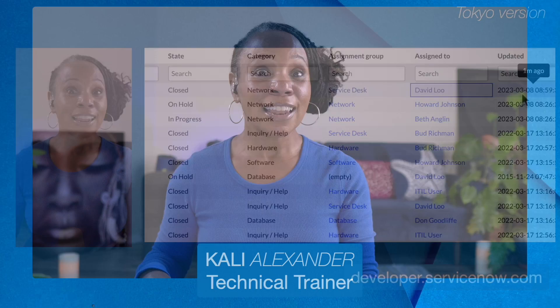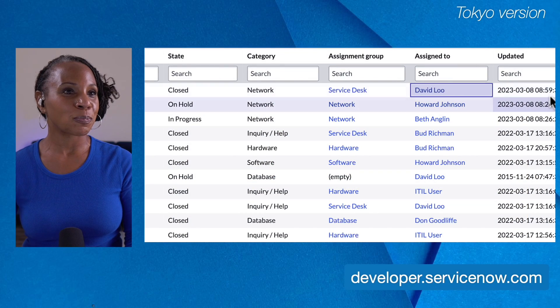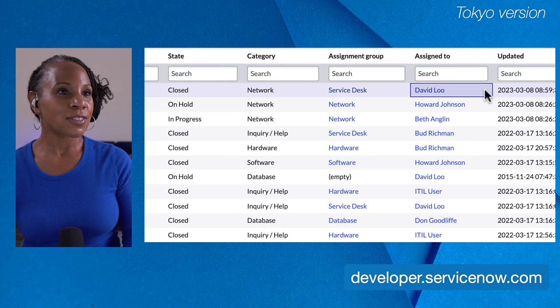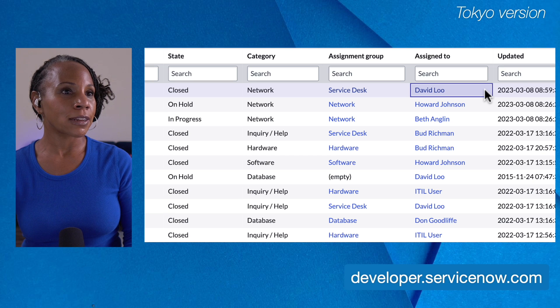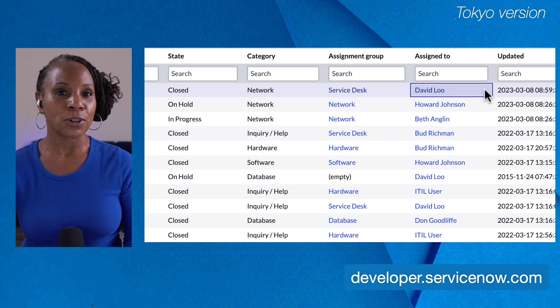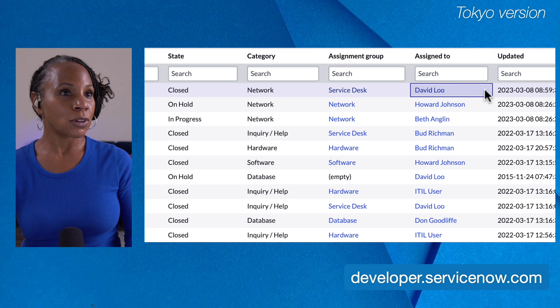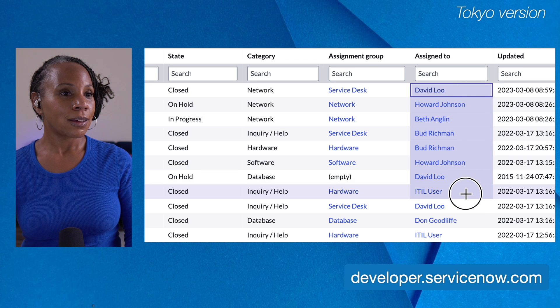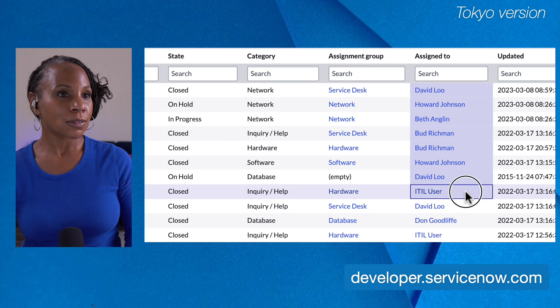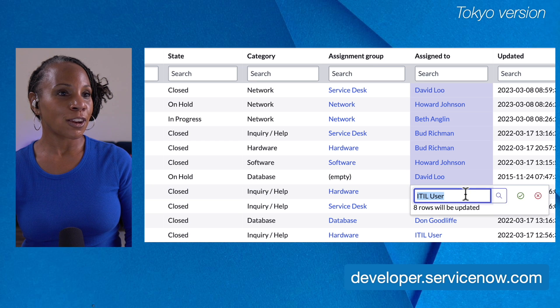Now this certainly makes a lot of sense on a one-off basis, but what if you want to do this for multiple fields? Well, the list editor's got your back, so let's head back over to the incident list. So let's say for example that we would like to select multiple consecutive fields. We'll select the shift field, click, and then drag. We'll then double click on the empty area of the field and the list editor opens.